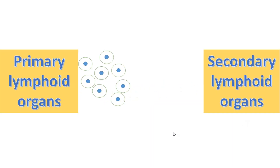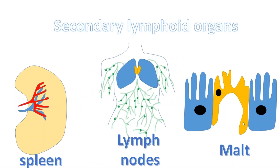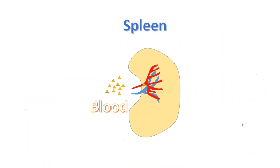Secondary lymphoid organs: mature B cells and T cells migrate from primary lymphoid organs to secondary lymphoid organs. The organs included are spleen, lymph nodes, and mucosa-associated lymphoid tissue.